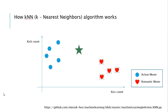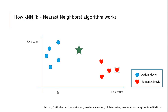Hi everyone. Today I'll briefly teach how the KNN algorithm works. In this example, we want to know if this green star movie is an action movie like these blue circles, or if it is a romantic movie like these red hearts.